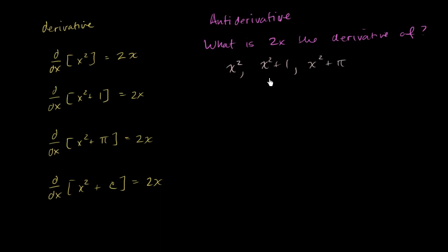So if you wanted to write it in the most general sense, you would write that 2x is the derivative of x squared plus some constant. So this is what you would consider the antiderivative of 2x. Now that's all nice, but this is kind of clumsy to have to write a sentence like this.